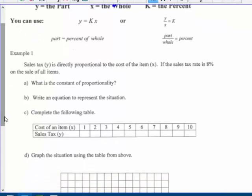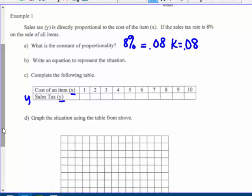Sales tax Y is directly proportional to the cost of an item X. If the sales tax rate is 8% on the sale of all items, what is the constant of proportionality? The constant of proportionality, 8%, is 0.08, so K = 0.08. That's 8 cents on every dollar that I purchase an item. Write an equation to represent that constant: Y = 0.08X.